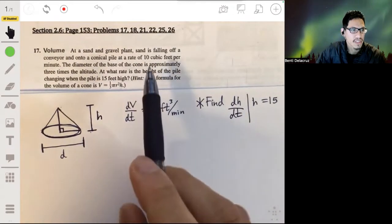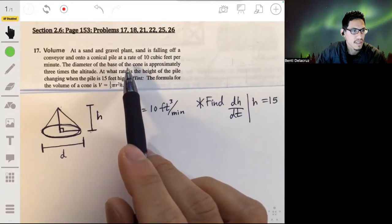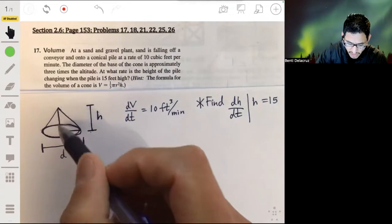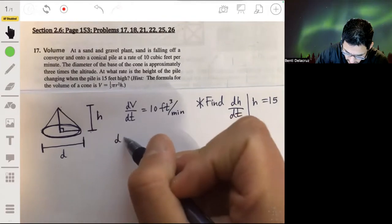Now, some other information we're given: we're given the diameter of the base. It's approximately three times the altitude. So again, with altitude, just think of the height of this cone. So d is the diameter of the base. You can say d is three times h.